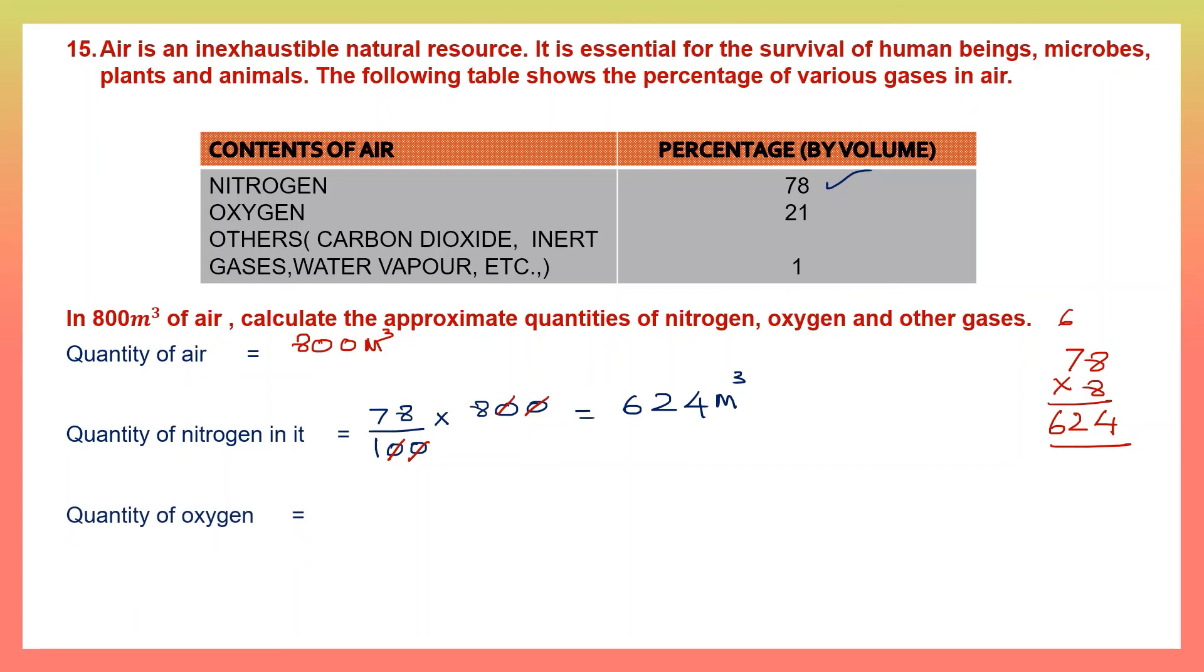Next, quantity of oxygen. In the table it says the percentage is 21. Using that, let's find the quantity. 21 by 100 into 800. Let's cancel. Two zeros and two zeros. We have 21 into 8. 8 ones are 8, 8 twos are 16. We have 168 as our answer. So the quantity of oxygen is 168 meter cube.